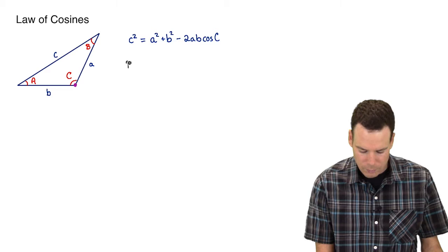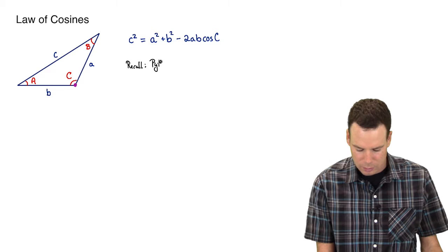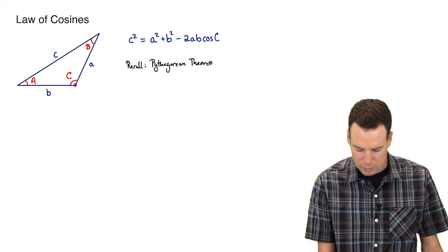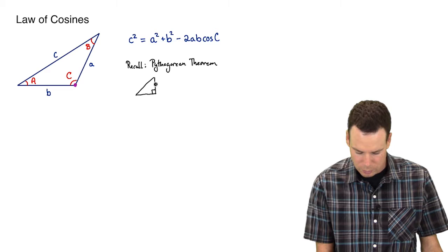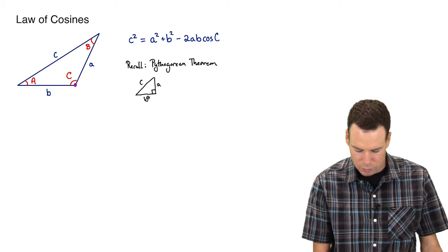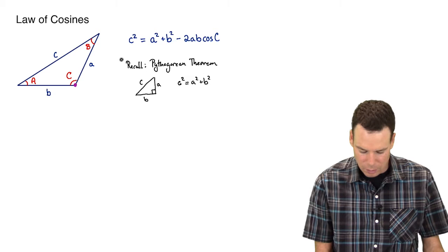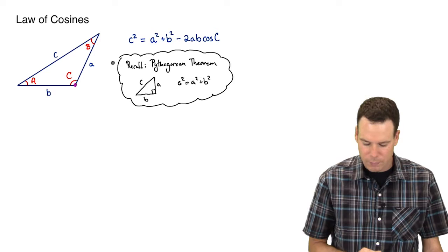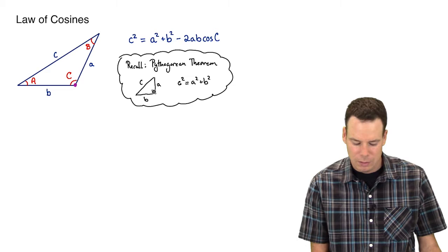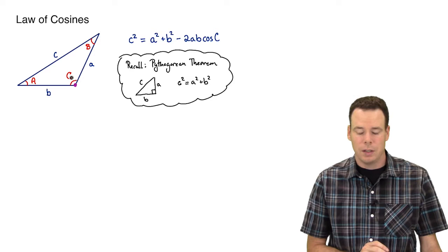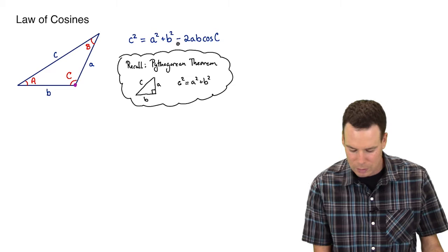You can think of the Law of Cosines as just a general version of the Pythagorean Theorem. The Pythagorean Theorem says you've got a right triangle with hypotenuse side length c and other two sides a and b, and it says that c squared is equal to a squared plus b squared. This is actually just a special case of the Law of Cosines. The Pythagorean Theorem takes capital C to be 90 degrees, while the Law of Cosines considers what happens when angle C is not 90 degrees — in that case we need an extra adjustment term.